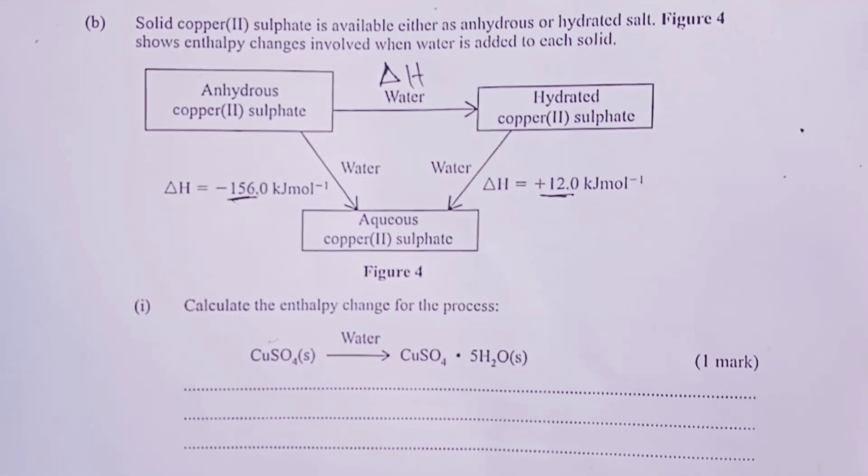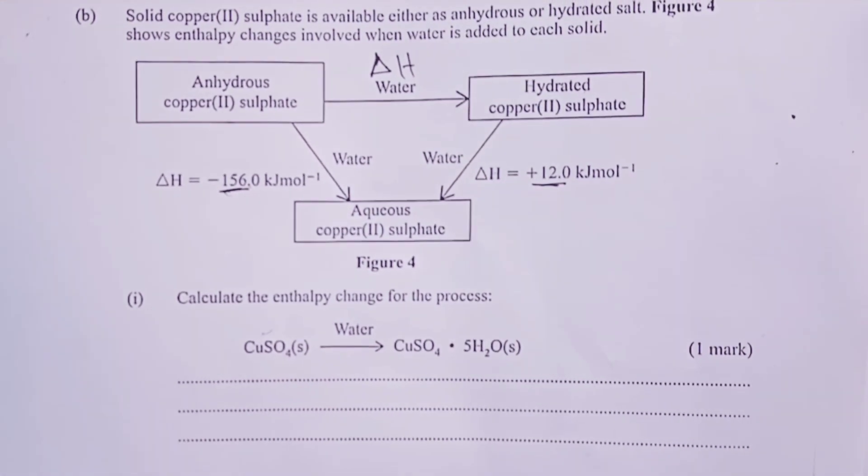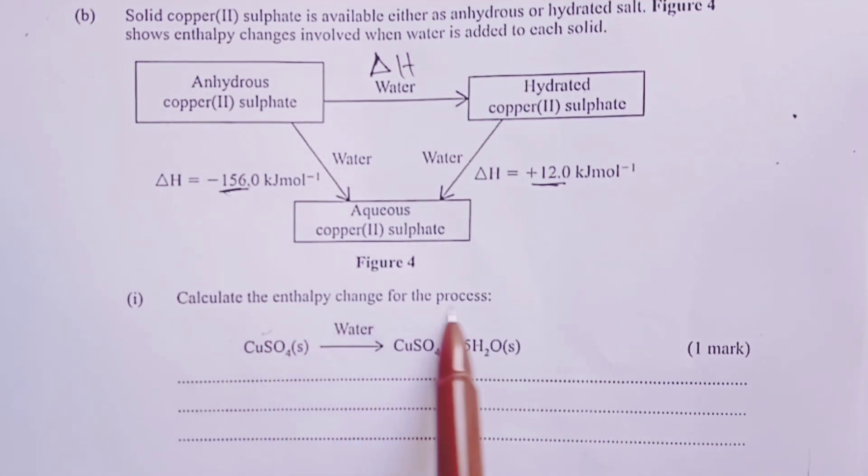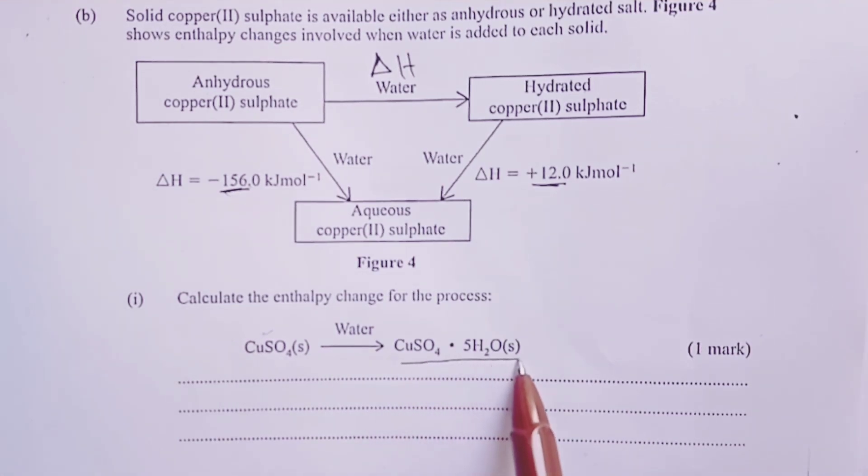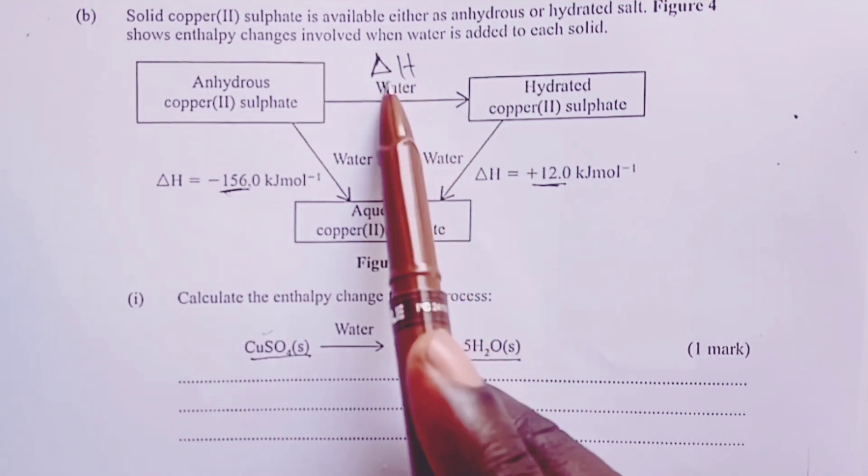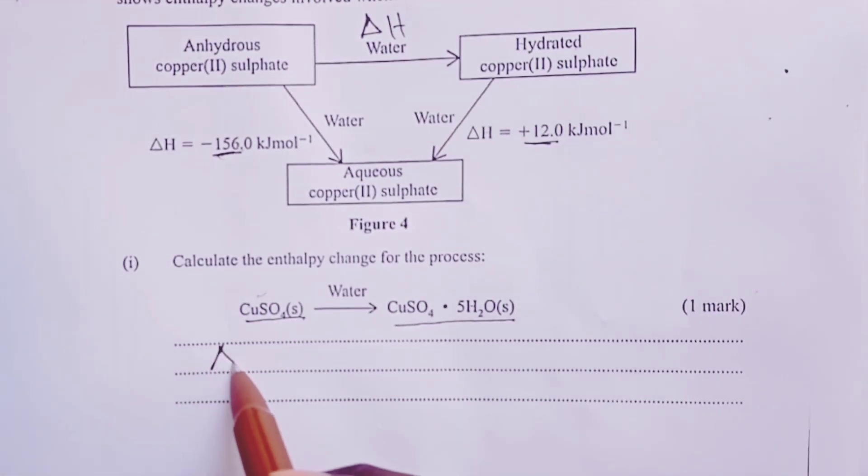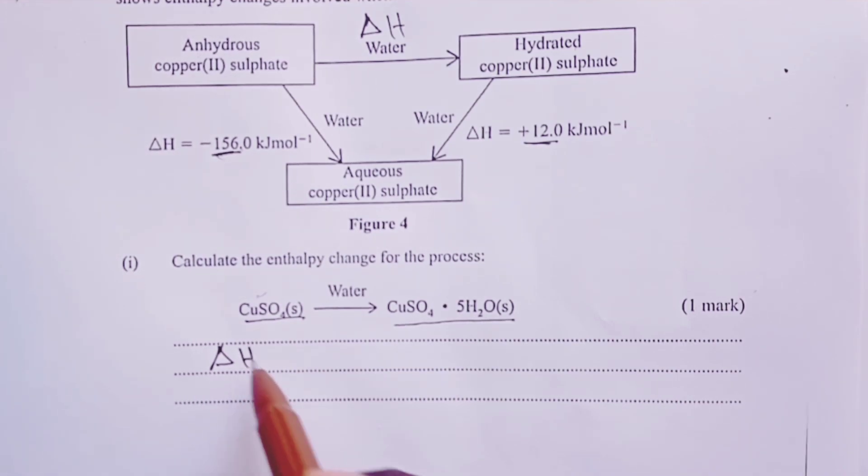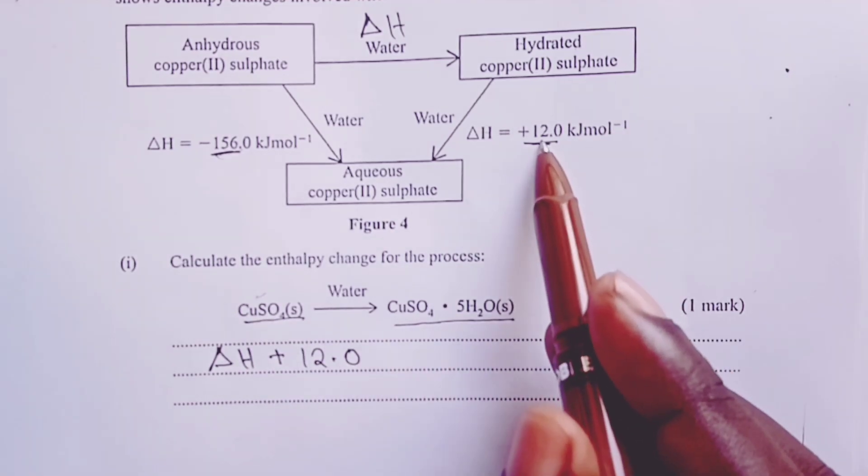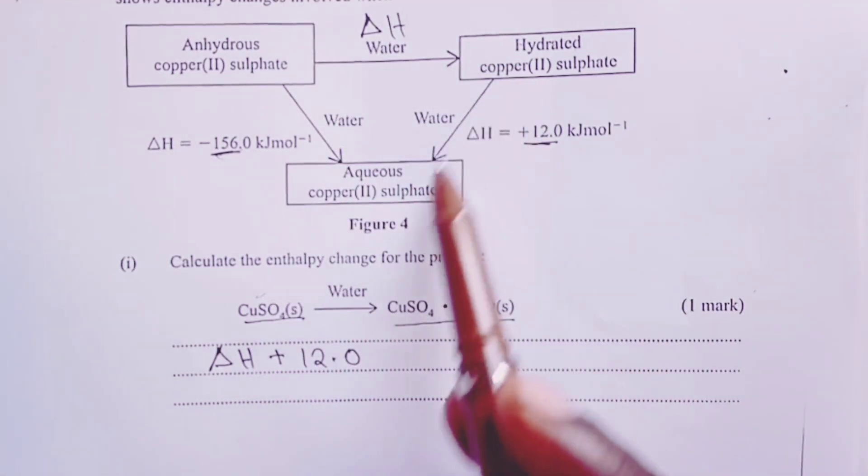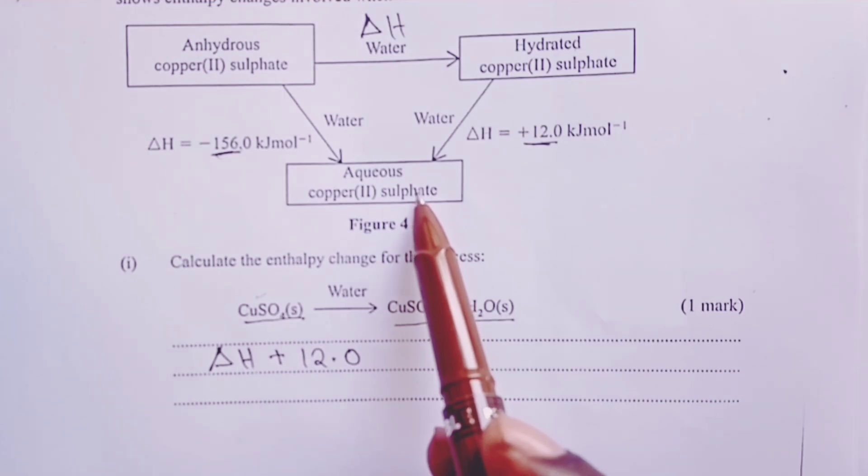Let's look at what the question was demanding. We are told to calculate the enthalpy change for the process: CuSO4(s) + Water → CuSO4·5H2O(s). That is represented by ΔH. So by Hess's law, ΔH added to 12.0 kilojoules.